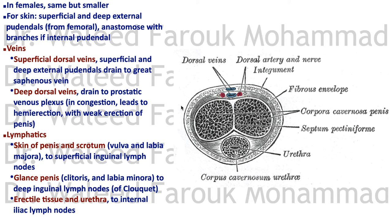For venous drainage: there are superficial dorsal veins, and superficial and deep external pudendal veins that drain into the great saphenous vein. The deep dorsal vein drains into the prostatic venous plexus — congestion of the prostatic venous plexus leads to partial or weak erection of the penis. Lymphatics from the skin of the penis and scrotum drain to the superficial inguinal lymph nodes, the glans penis to the deep inguinal lymph nodes, and the erectile tissue to the internal iliac lymph nodes.